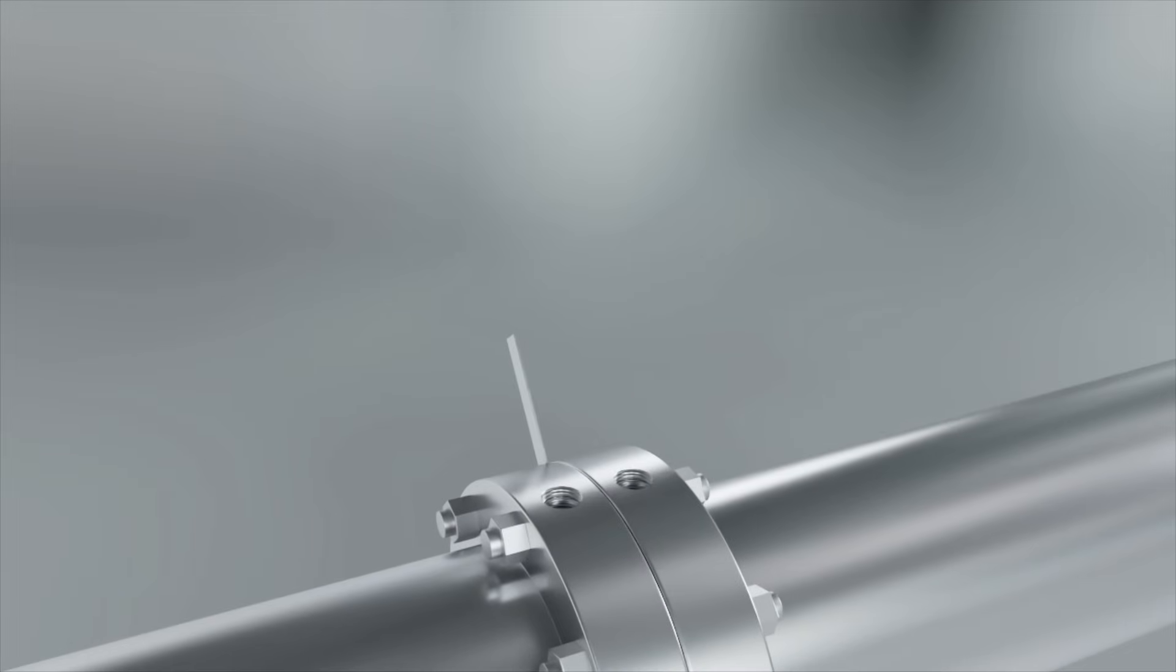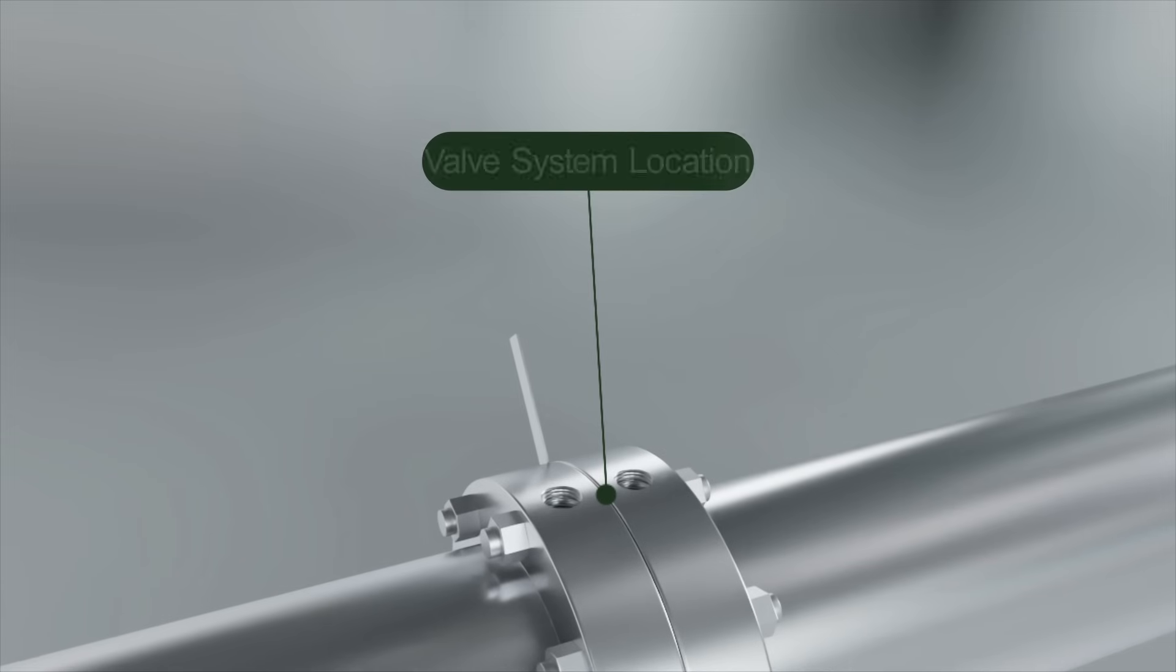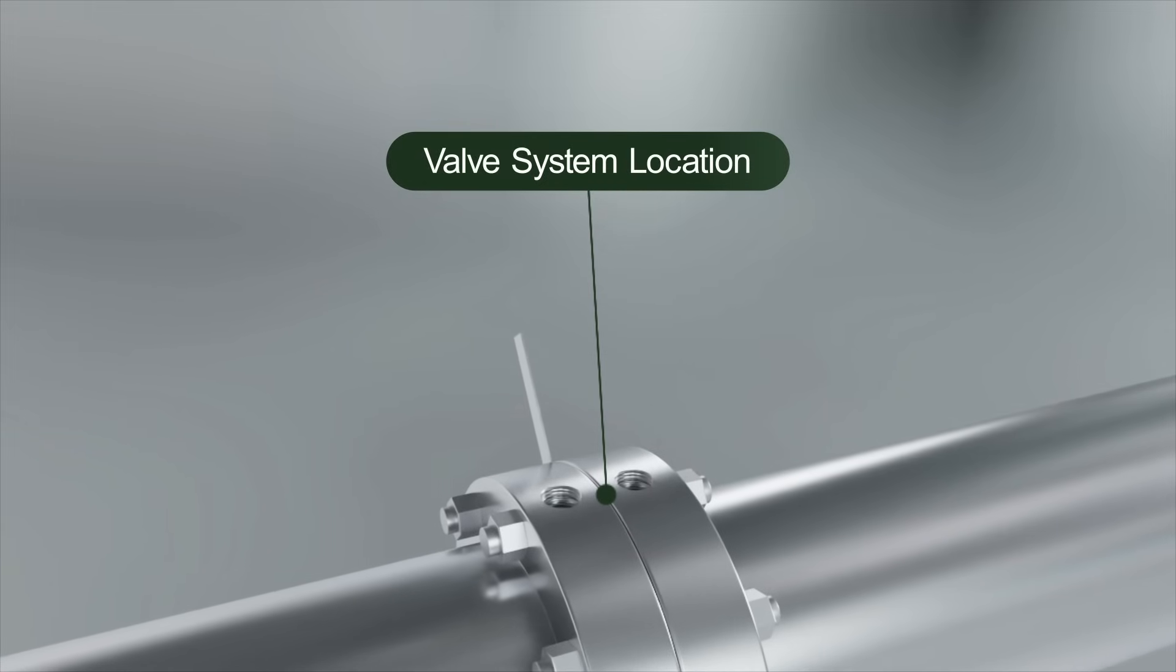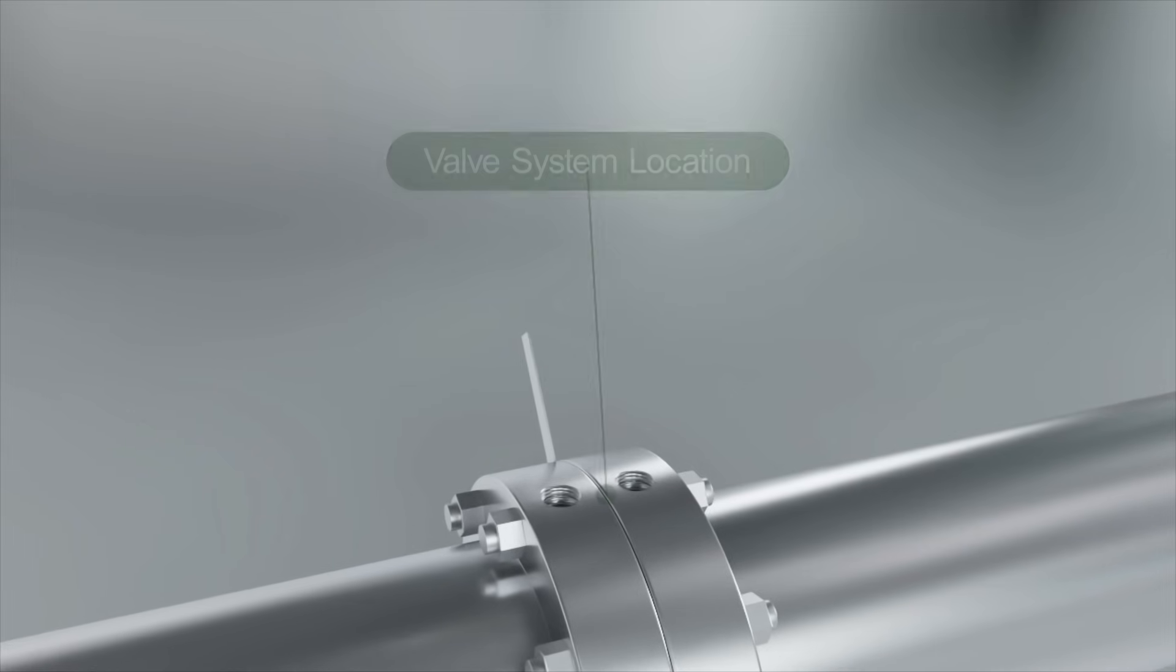Most often we see an orifice flange union or orifice fitting installed as part of the piping system. Typically, the space on top of the orifice fitting or orifice flange union is where the valve components are very critical.